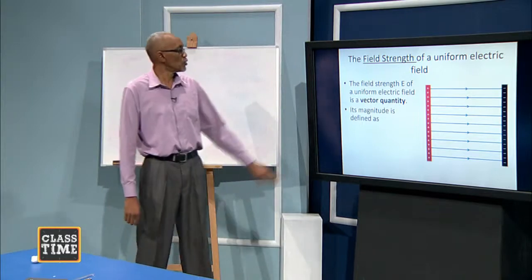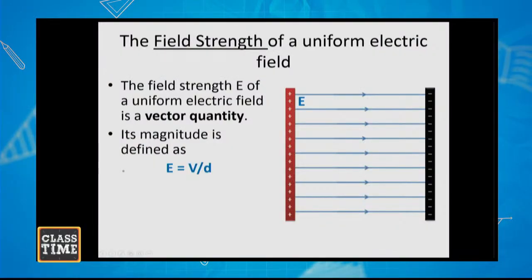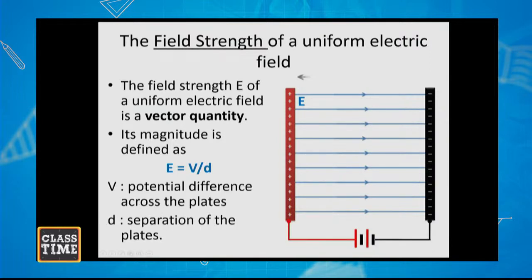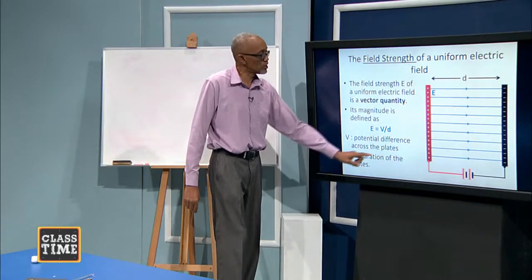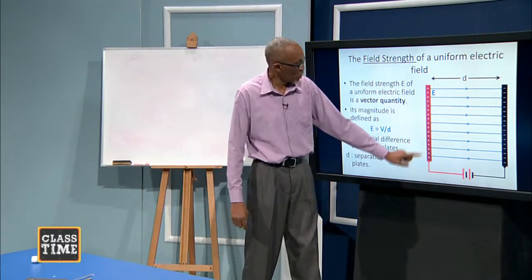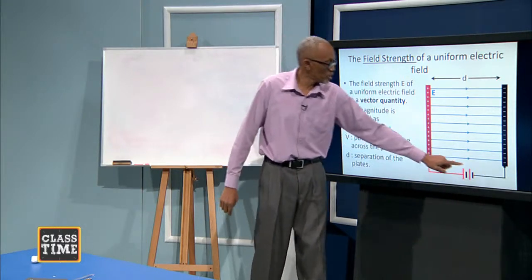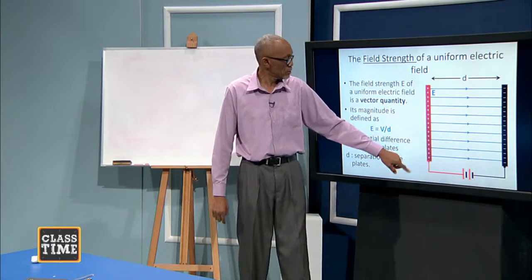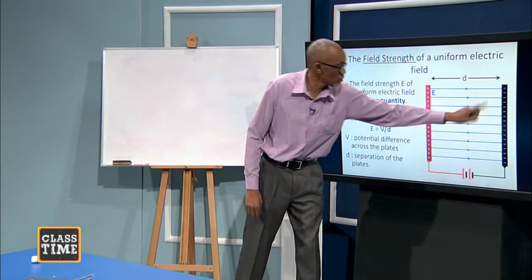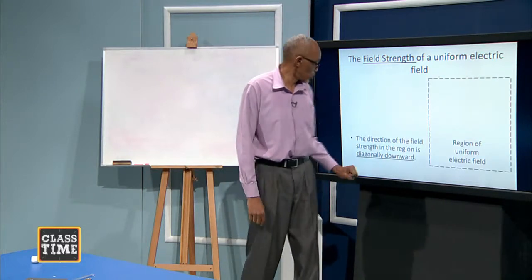The magnitude is defined as E — we use the symbol capital E for the field — and that is equal to the potential difference divided by the separation of the plates. V is the potential difference and D is the separation of the plates. So if we connect a source of potential across the two plates, one positive and one negative, with a separation D, we can calculate the field strength.